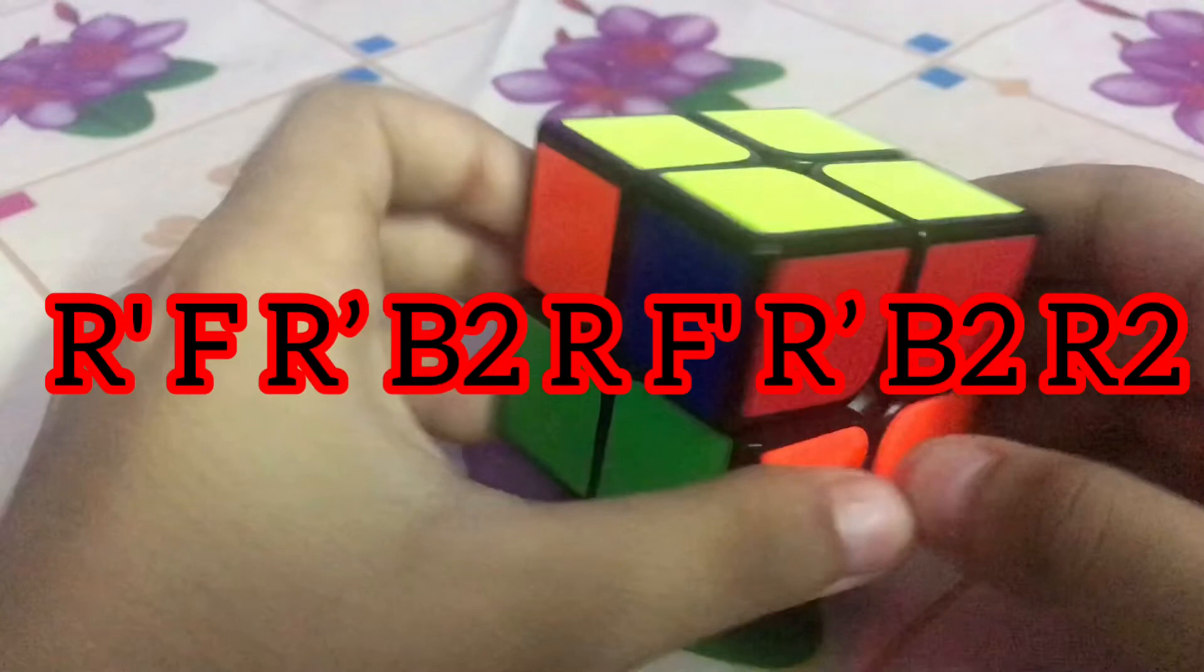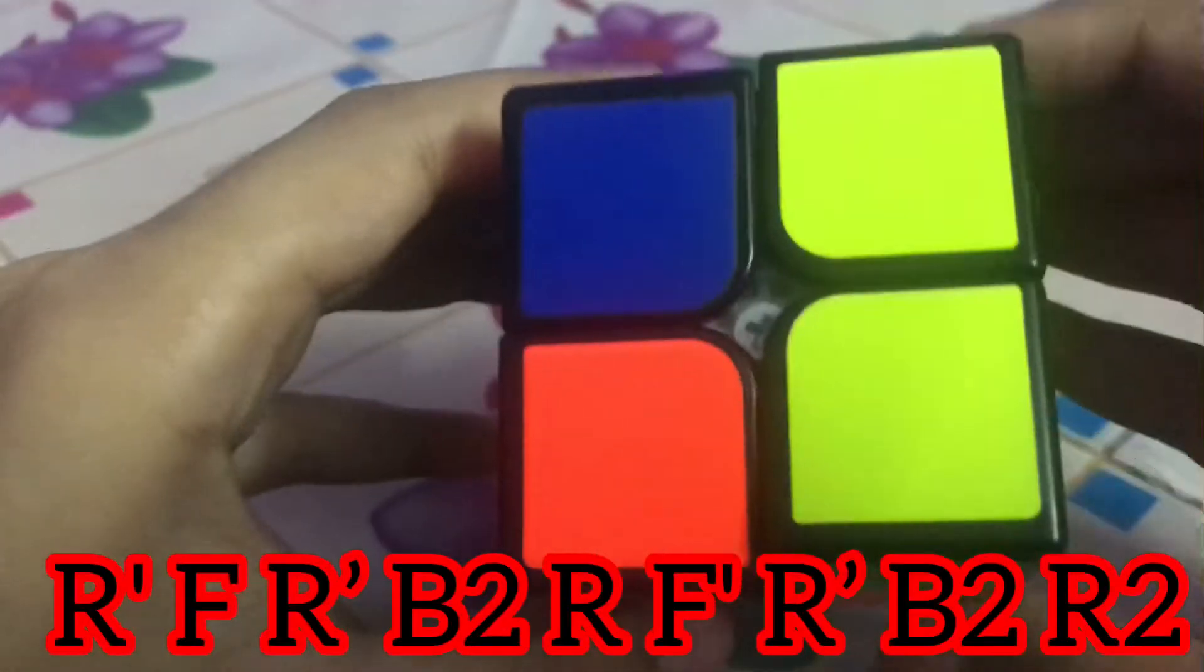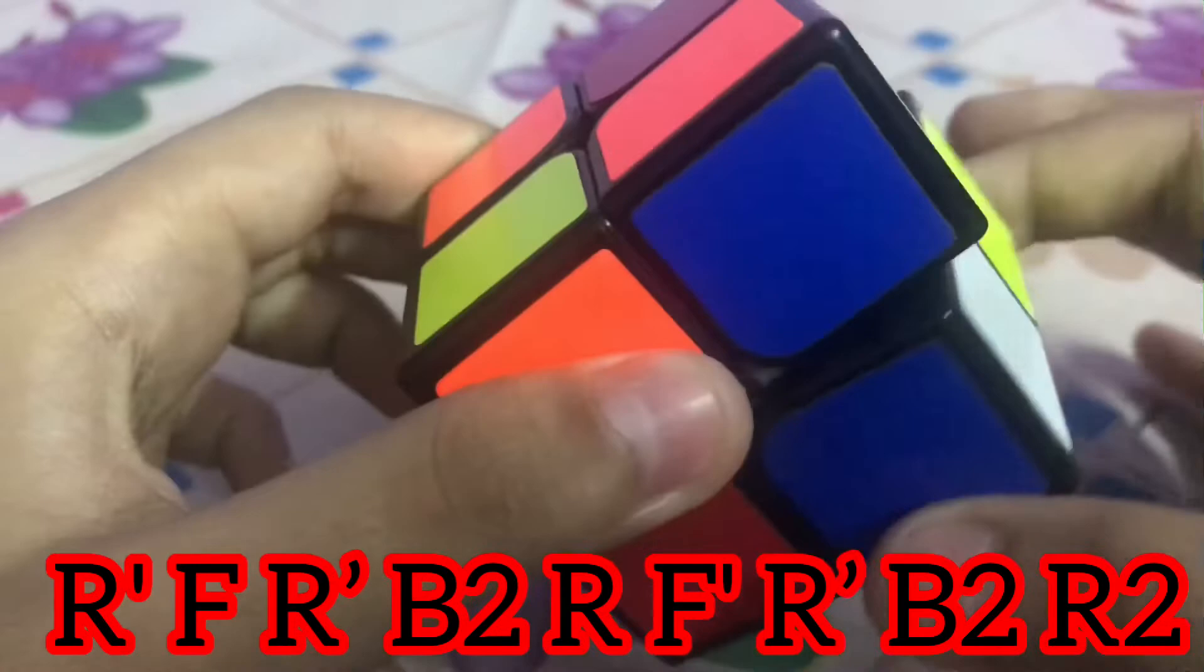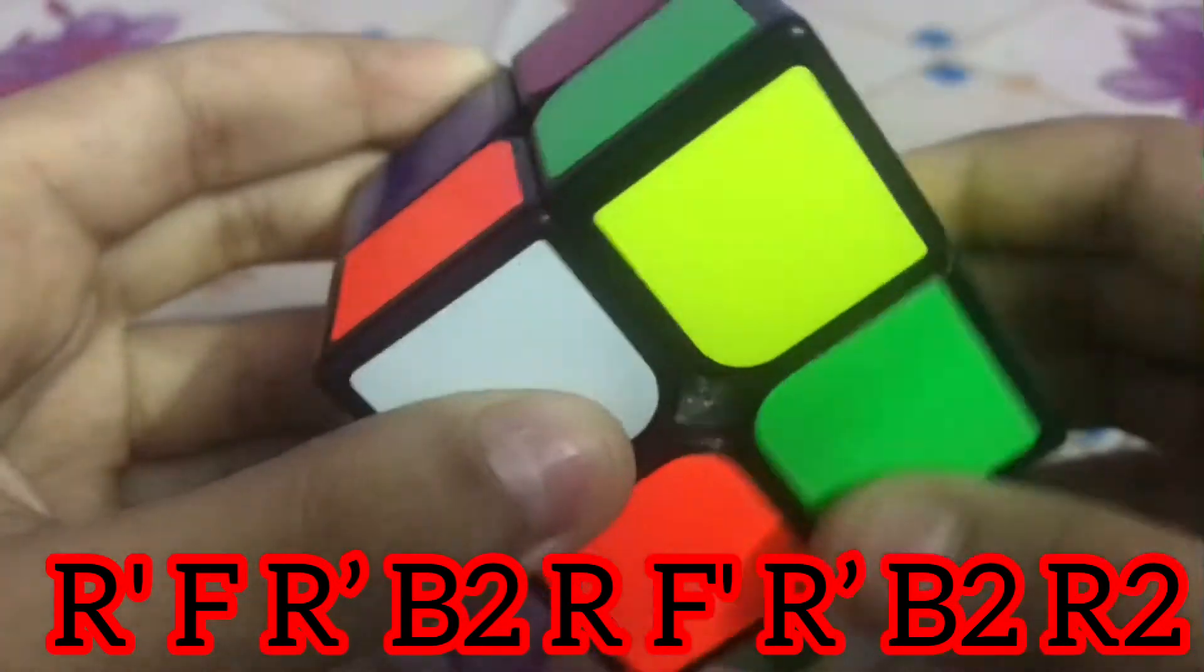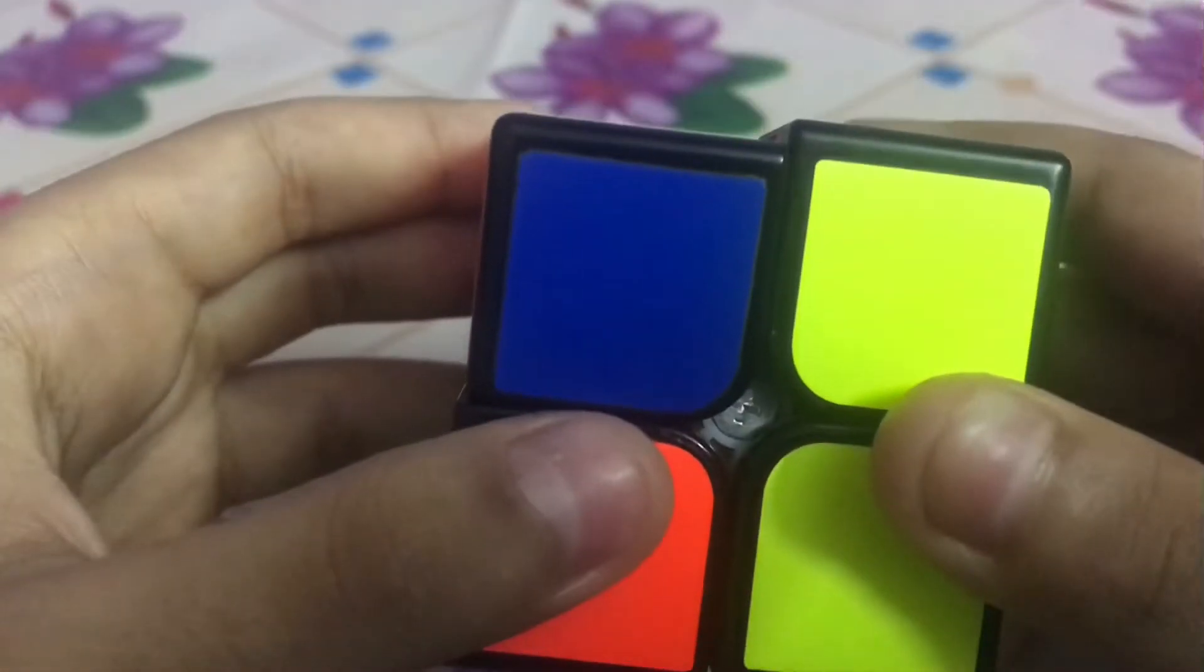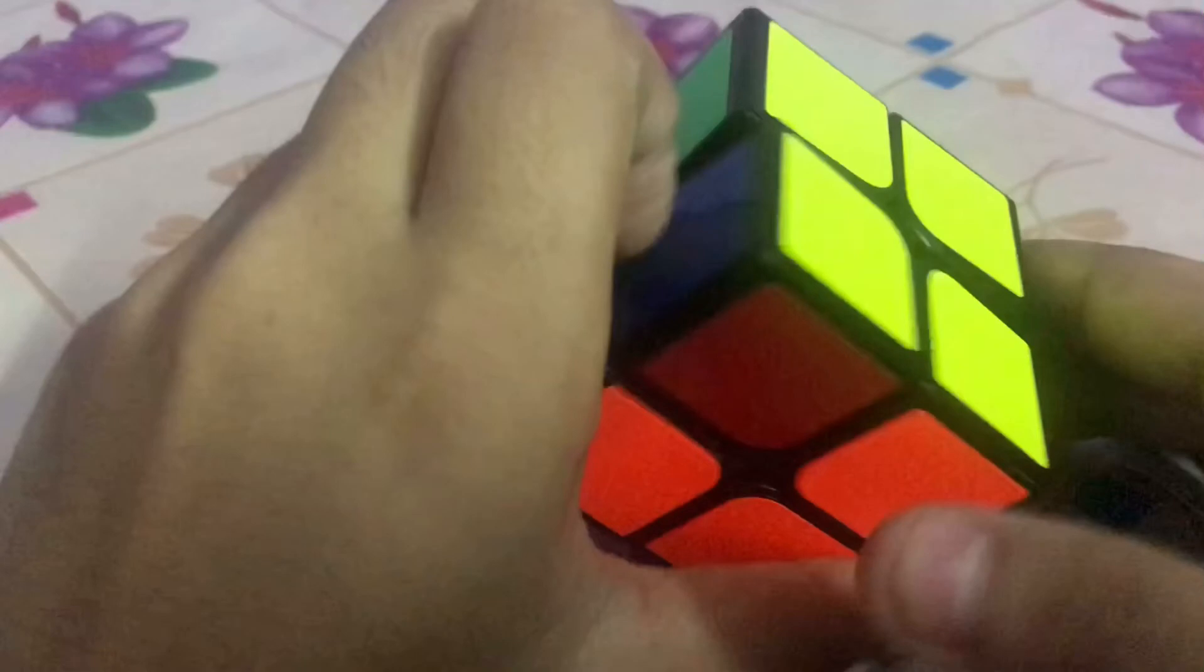Our last equation for solving the Rubik's cube is R dash F R dash B2 R F dash R dash B2 R. Here you only have two situations. One is this one. Here you will have one color solved other than yellow and white, so you have to take the opposite side and do the equation.